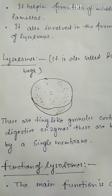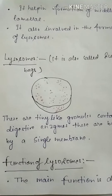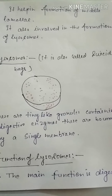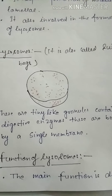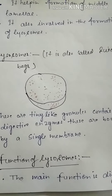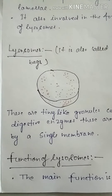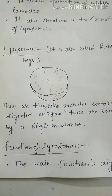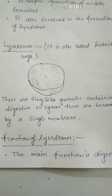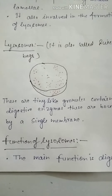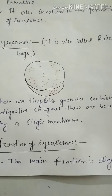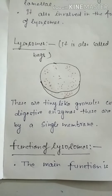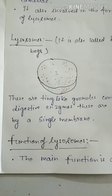Next organelle we see is the lysosome. It is also called the suicide bag. These are tiny granule-like structures containing digestive enzymes. These are bounded by a single membrane. In the figure, we see single membrane structures which have tiny granules inside.